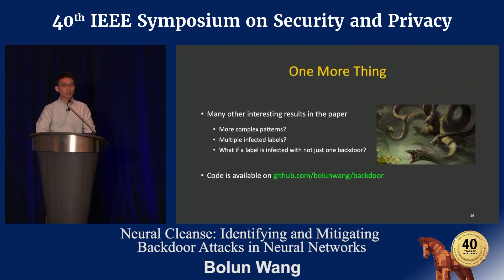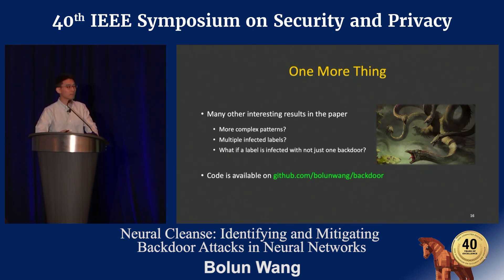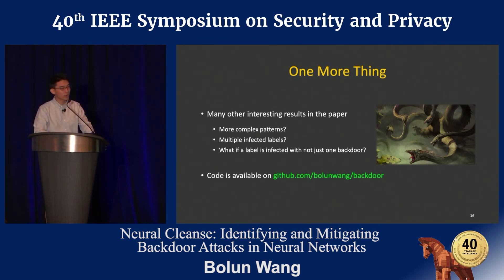There are many other interesting findings in the paper that I didn't have time to cover today — for example, what about more complicated patterns? Can we detect more than just a simple yellow square? What if there are multiple labels being infected, or multiple backdoors in the model? We have all of those covered in the paper, and I strongly encourage you to read it. Our code is also available on GitHub — feel free to play around with it.